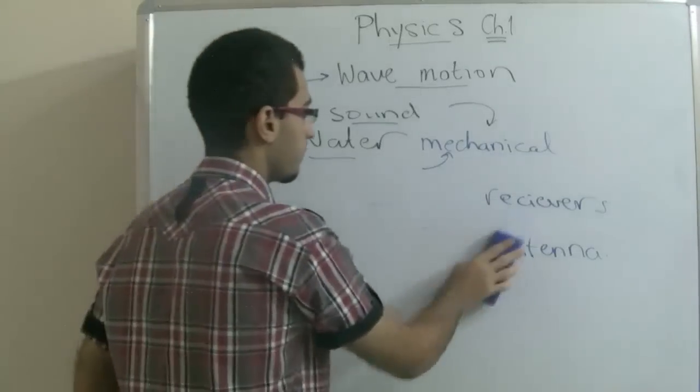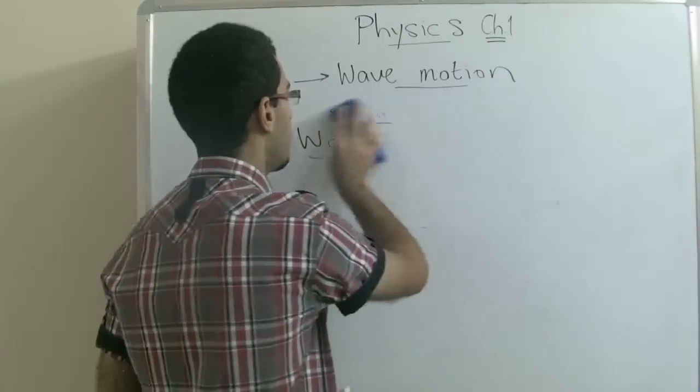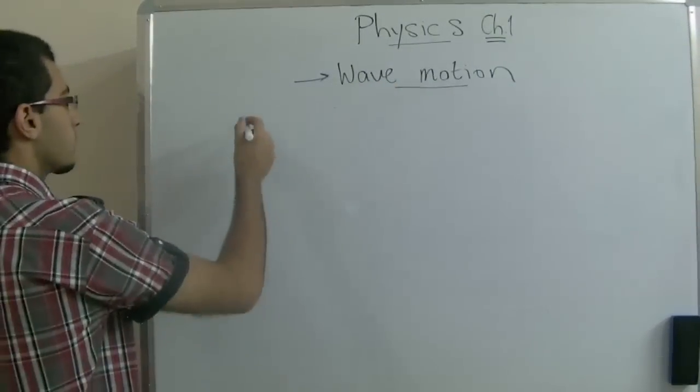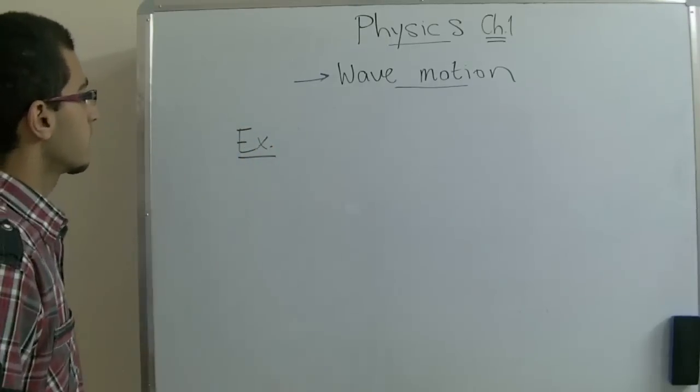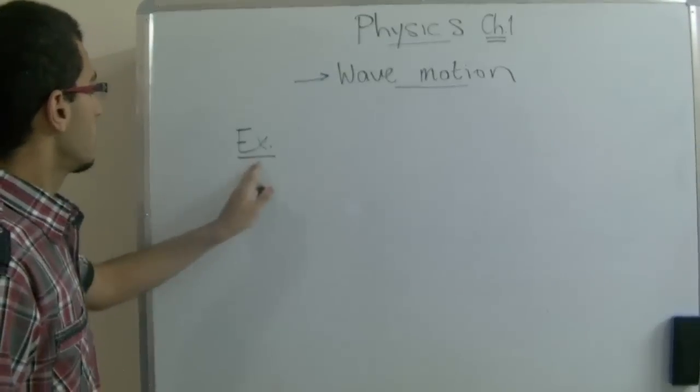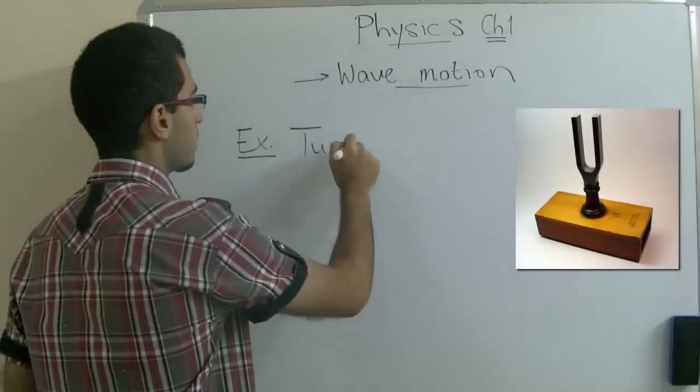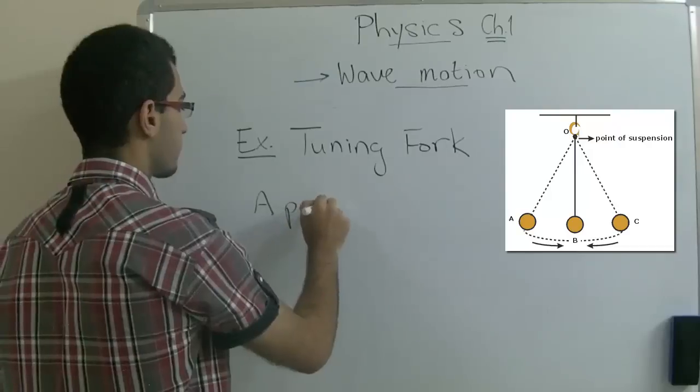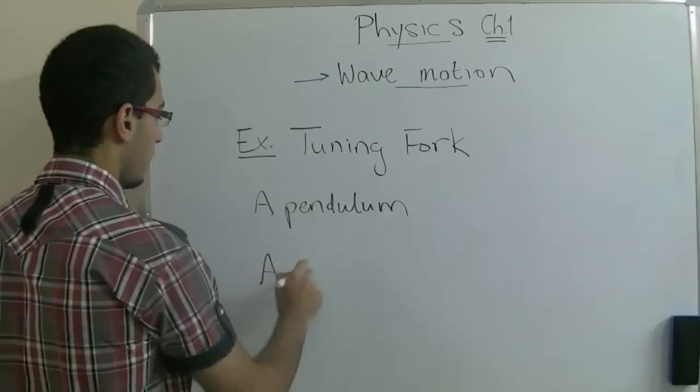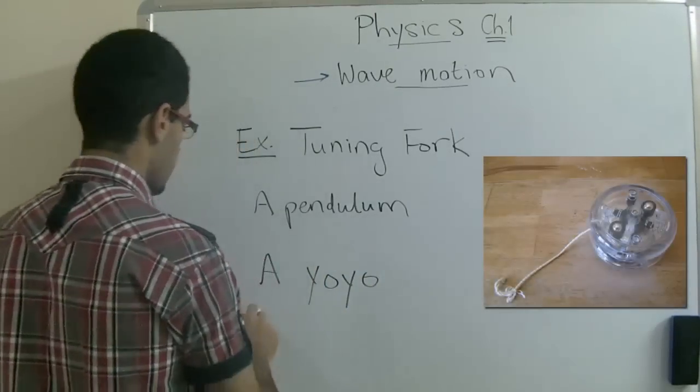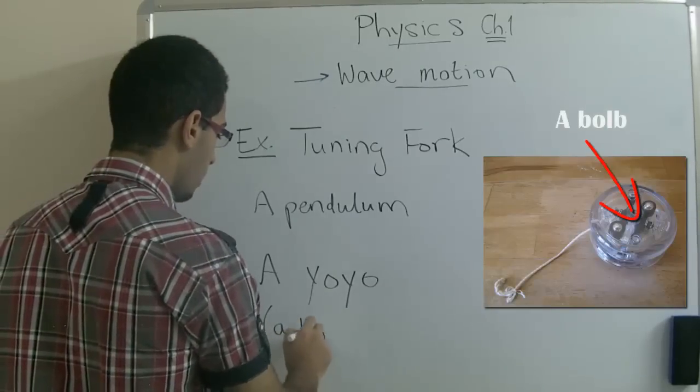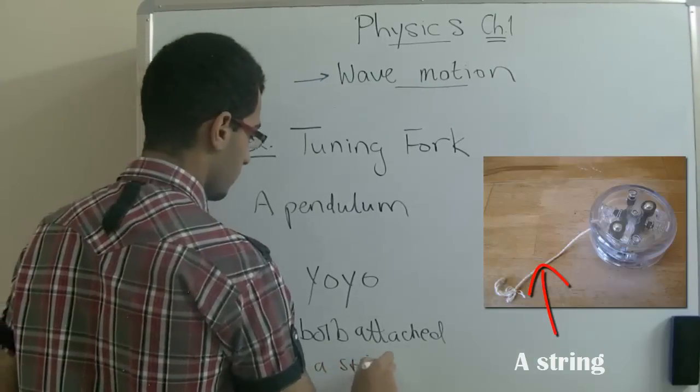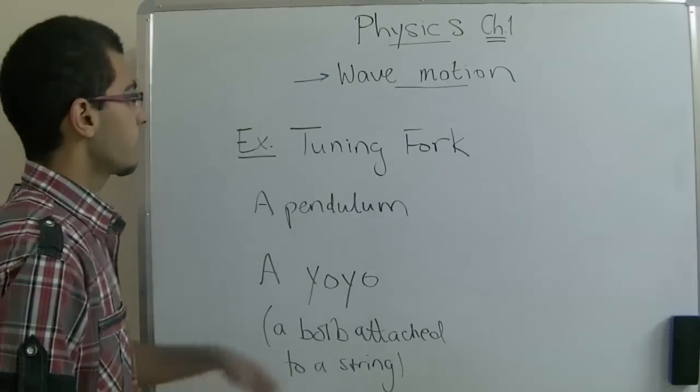We are going to talk about the mechanical waves in depth, then we are going to talk about electromagnetic waves. We have some examples for mechanical waves like a tuning fork, like a pendulum, and like a yoyo. The yoyo is a ball attached to a string. These are some examples for mechanical waves.